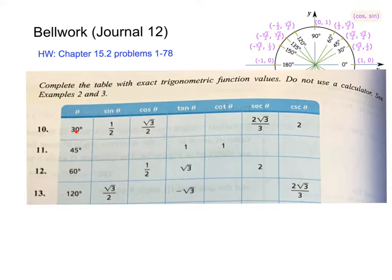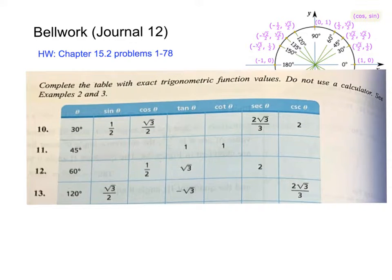Number 10 we've actually done before in the previous journal. The only thing is it was written just a little bit differently. We had found sine 30 is 1/2, cosine 30 is square root of 3 over 2, and to find tangent we had to figure out what our y value and x value were, because tangent is y over x. On the unit circle, x is cosine and y is sine.